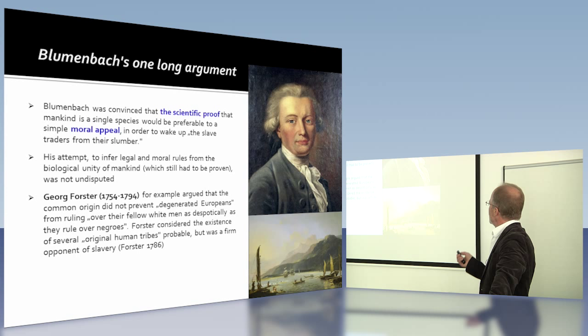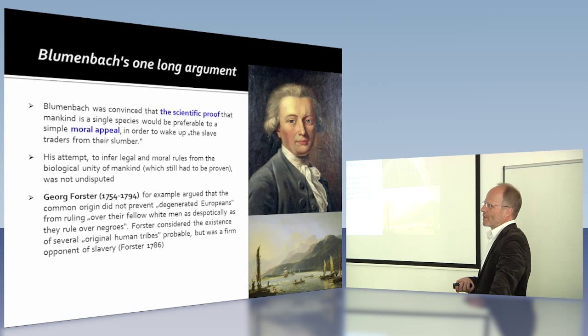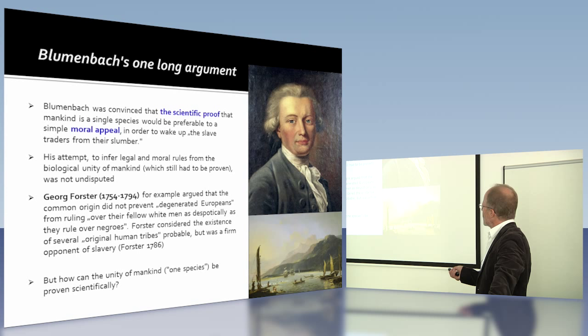Georg Forster was a polygenist and he said, well, the common origin did not prevent degenerated Europeans from ruling over their fellow white men as they rule over Negroes. So Forster was not convinced that this argument would actually help much. But anyway, Blumenbach thought it would at least bring some advantages.